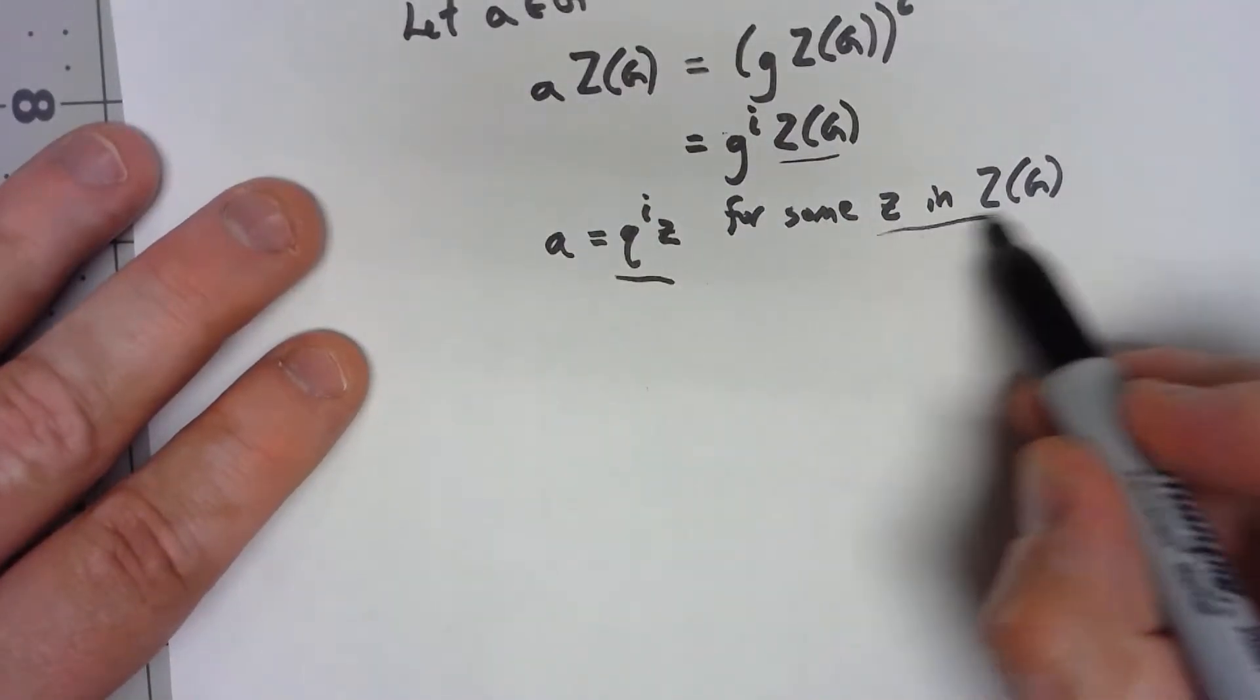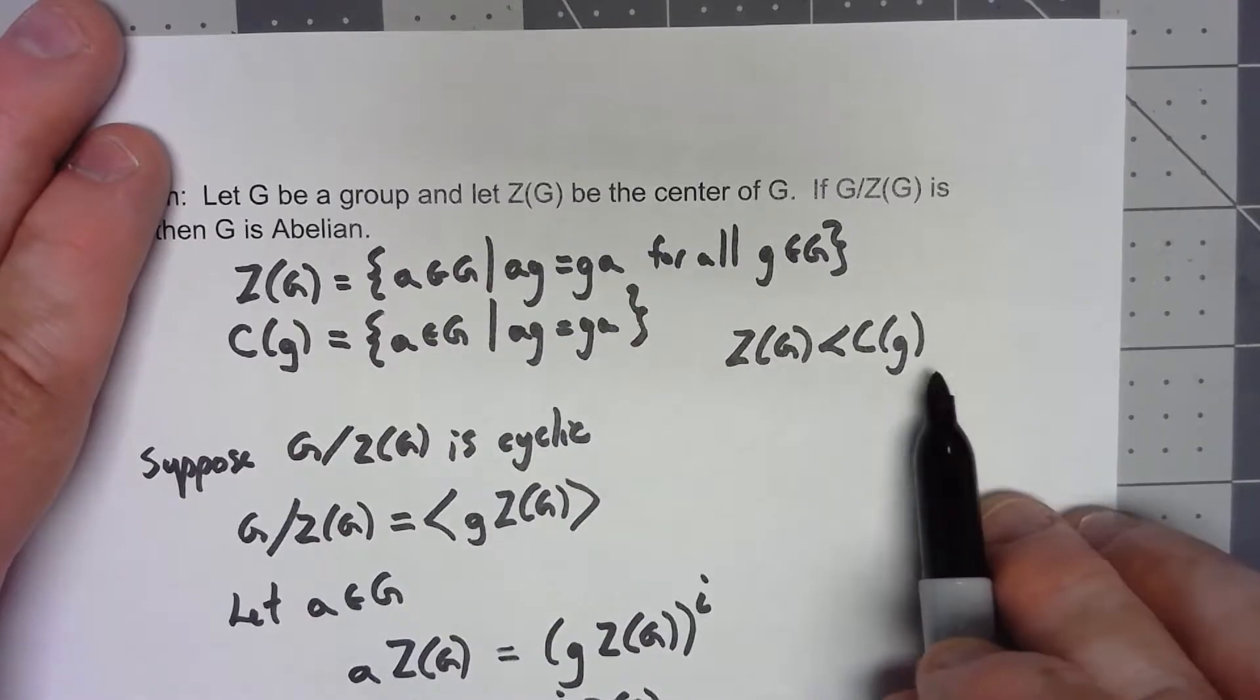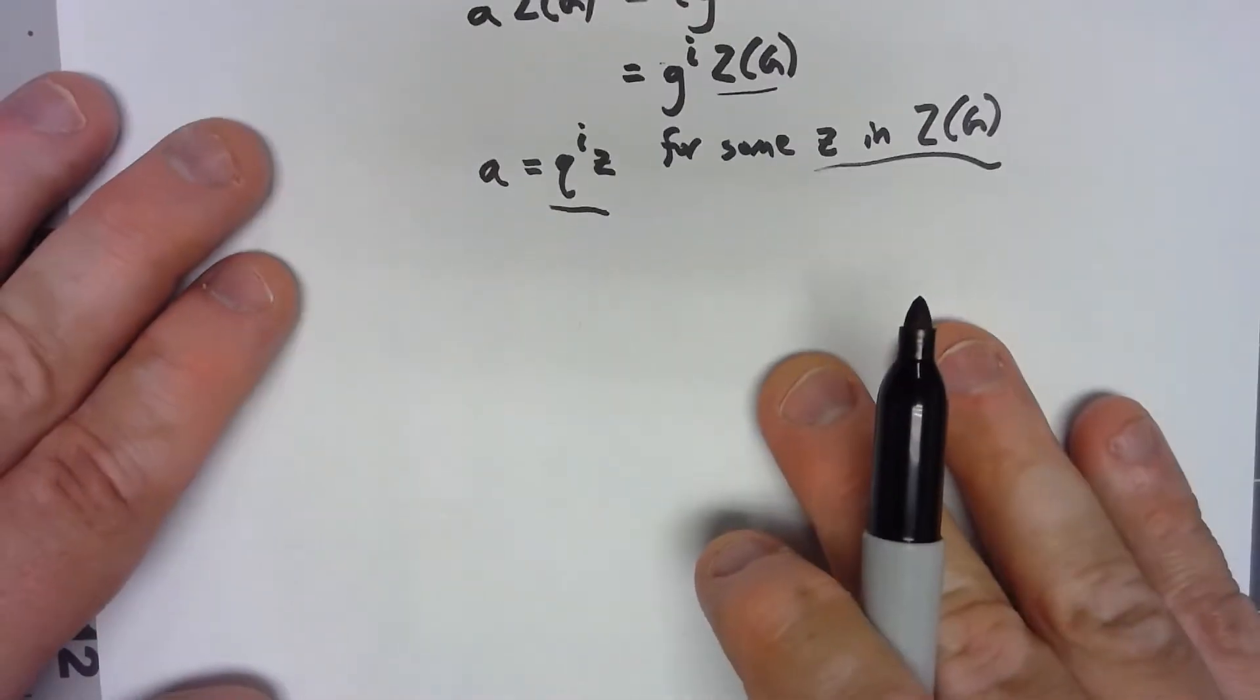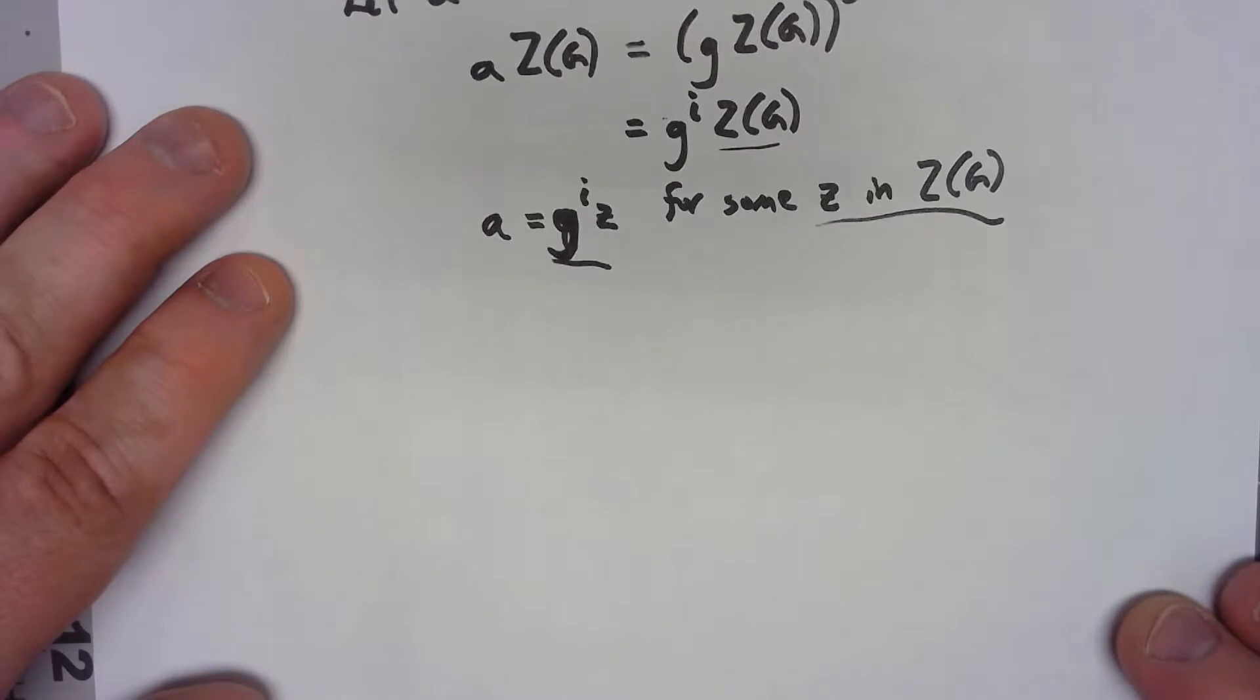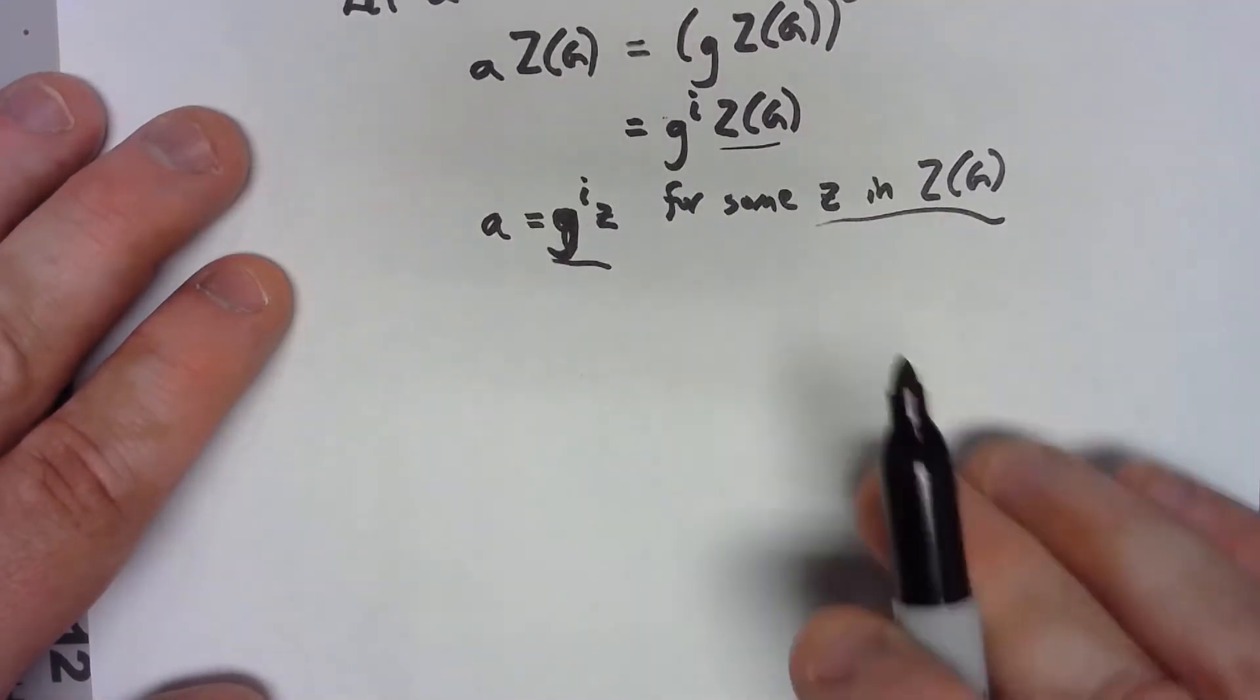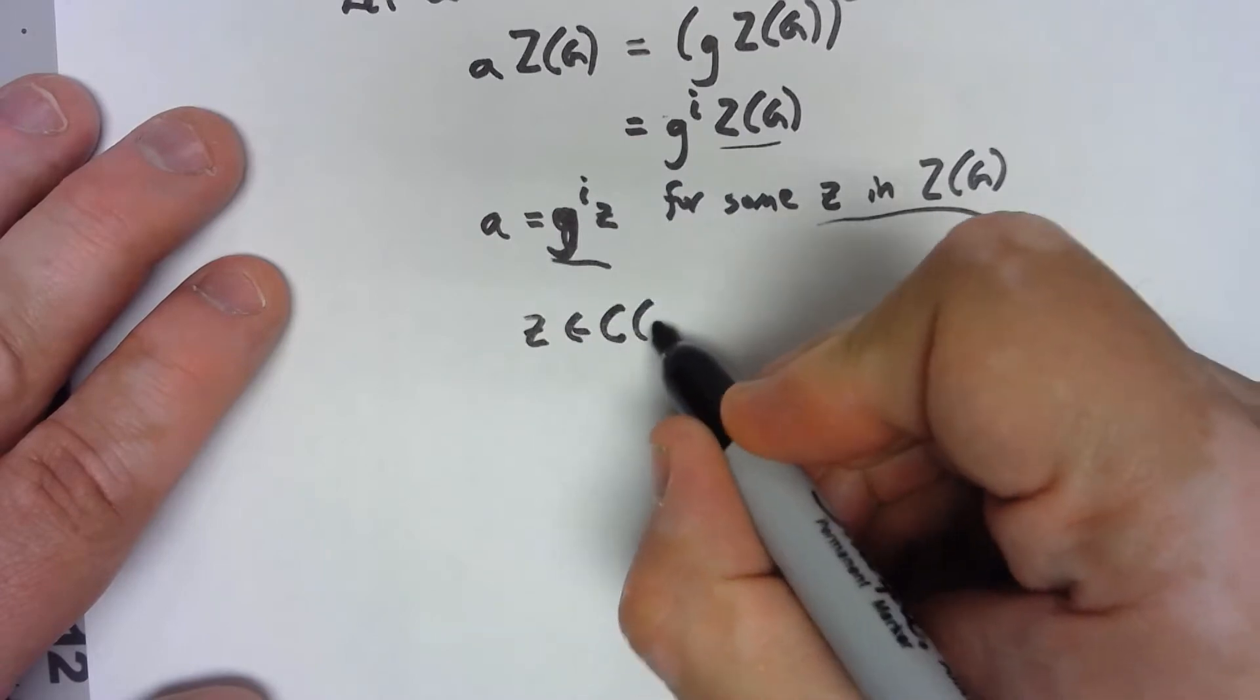Now let's look at this thing here. Z is in the center. So definitely, like we said before, the center is a subgroup of the centralizer of G. Z is in the center. That means it commutes with everything. Therefore, it commutes with G. So Z is in the centralizer of G.